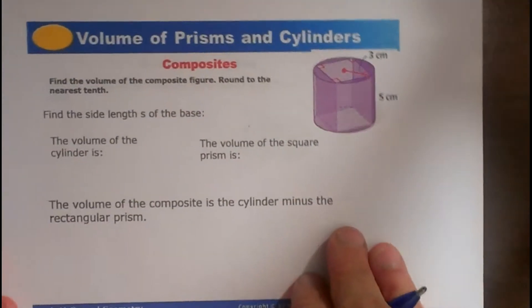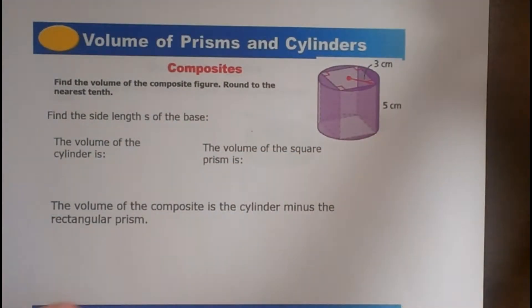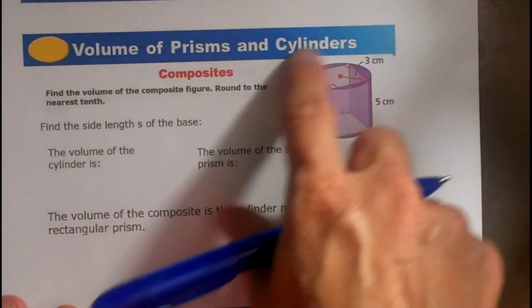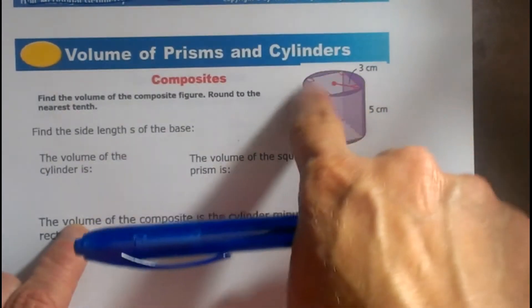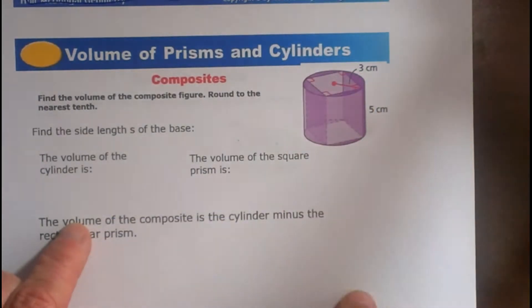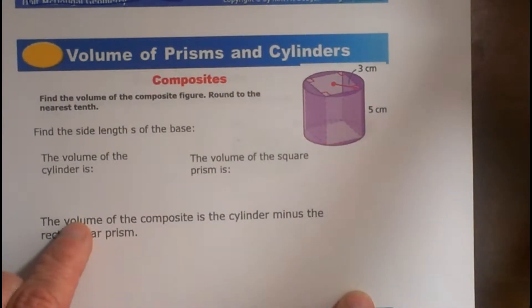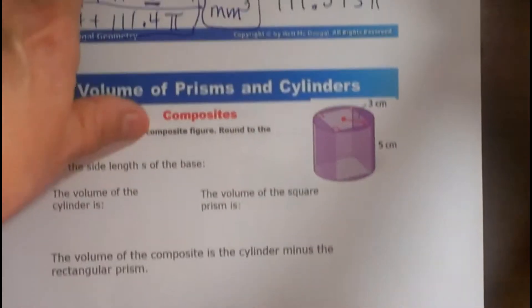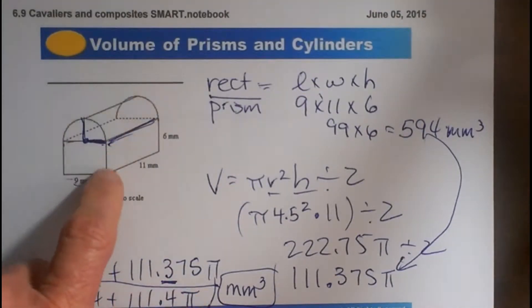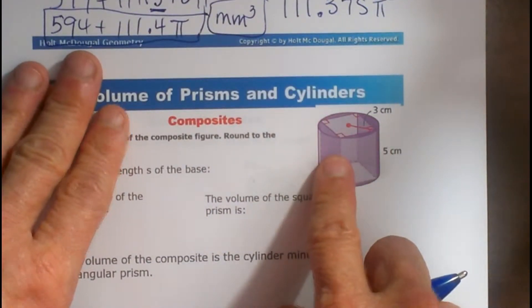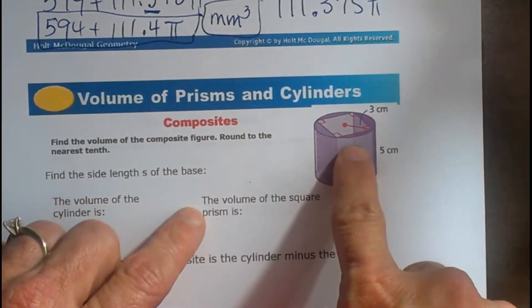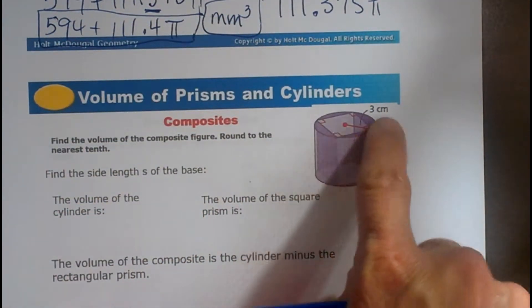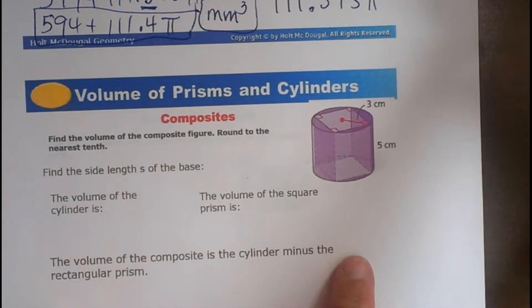Now let's look at composite figures where we have a hole in the middle. So we have a cylinder, and in the middle of it, cut out of the center of it, is this prism. So instead of adding the two quantities together like we did up here for the composite figures, we are going to subtract because we take the volume of the cylinder and we are cutting out the volume of that square prism.